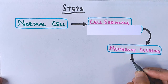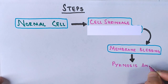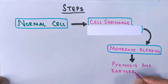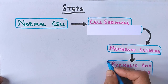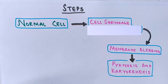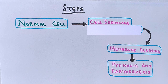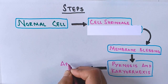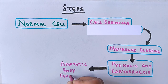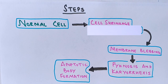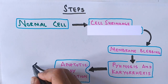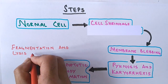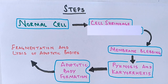Then two major events occur: the first is pyknosis and the other is karyorrhexis. Pyknosis is the irreversible condensation of chromatin in the nucleus of a cell undergoing apoptosis. This is followed by karyorrhexis, which is the destructive fragmentation of the nucleus of a dying cell. After that, apoptotic bodies are formed — these are fragments containing parts of the dying cell. Finally, there is fragmentation and lysis of the apoptotic bodies, which marks the end of the cell.